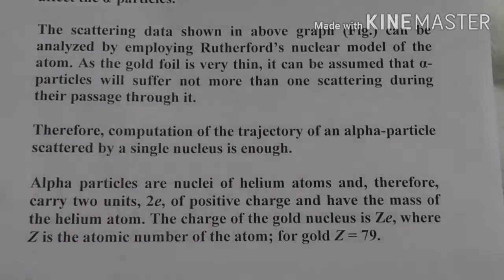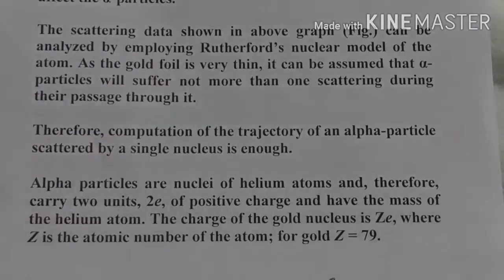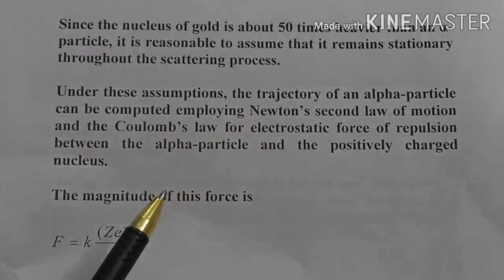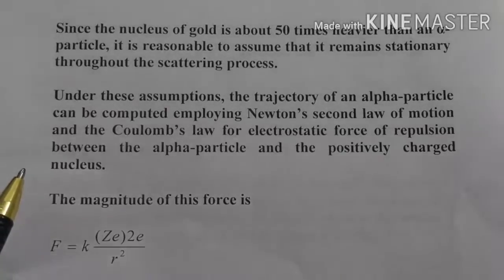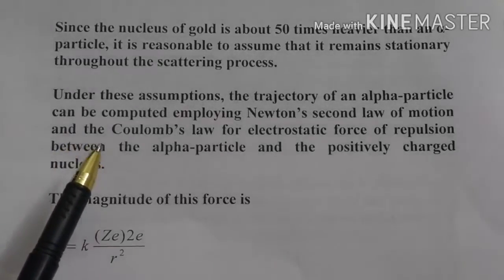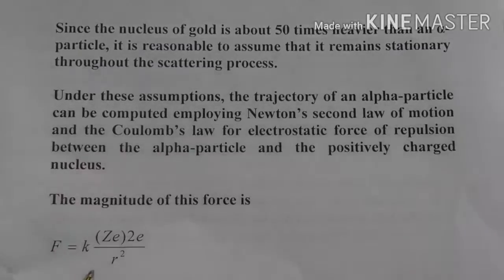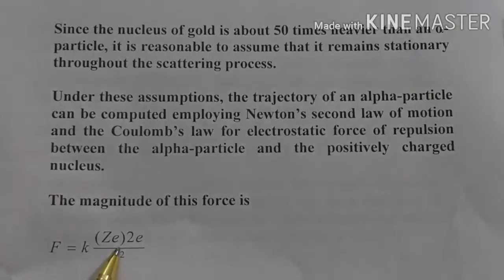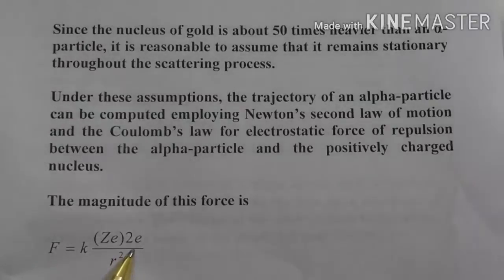Gold foil is used. If there are Z protons, then Ze. Z is 79, so charge is 79 times e, nucleus charge. And if you have seen, gold nucleus is 50 times heavier than alpha particle. So in the process of this scattering, the nucleus is not moving at all because it is too heavy. Only alpha particle gets deflected or scattered. How much force will act on it? If it is at distance r, then formula will be Coulomb's law: k q1 q2 by r square. Here q1 is gold nucleus charge Ze, alpha particle charge is 2e, and divided by distance square.